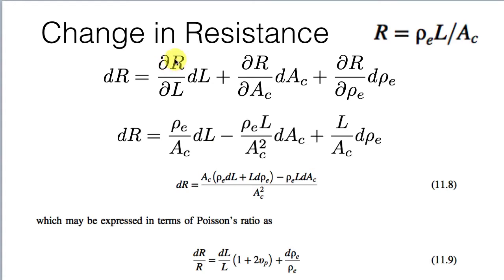If we look at the change in length and the resistivity, we're going to see an increase in total resistance dependent on the resistivity divided by the cross-sectional area. Taking the derivative with respect to L gives us the resistivity divided by the cross-sectional area. For the cross-sectional area term, it's an inverse relationship, so we wind up with cross-sectional area squared in the denominator. Taking the derivative with respect to resistivity gives the corresponding coefficient. It's fairly straightforward to look at these three effects.